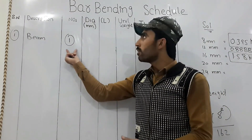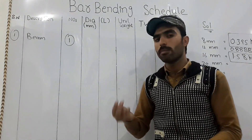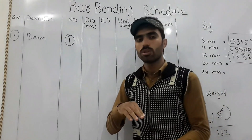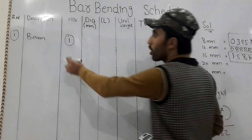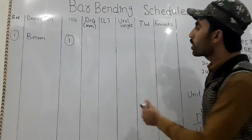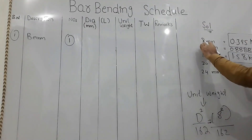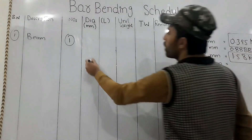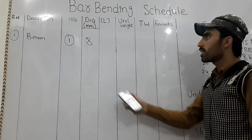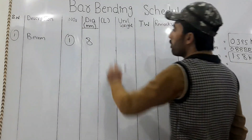In a beam, up and down on both sides we use four bars. So I'm writing four numbers. For diameter, I will choose 8mm from my solution, so I write 8mm here. And for the cut length, I need 14 feet.